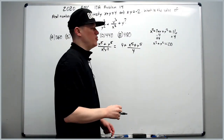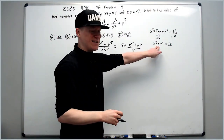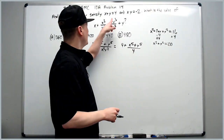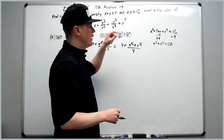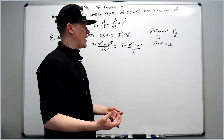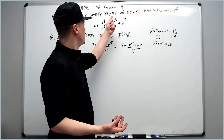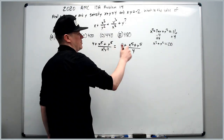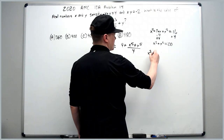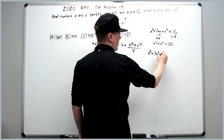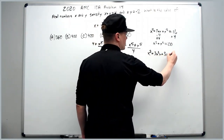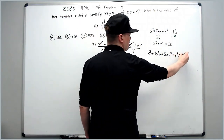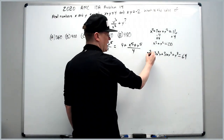From here there are two options: square again to get x to the fourth plus y to the fourth, or cube the original expression. I'll go with x cubed plus y cubed. Cubing x plus y equals 4 gives x cubed plus 3x squared y plus 3xy squared plus y cubed equals 64.